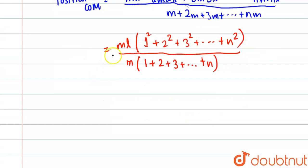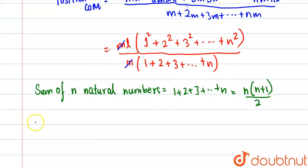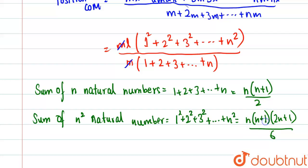We now apply formulas from sequences and series. The sum of n natural numbers is 1 + 2 + 3 + ... + n = n(n+1)/2. The sum of squares of n natural numbers is 1² + 2² + 3² + ... + n² = n(n+1)(2n+1)/6. We use both these standard formulas.